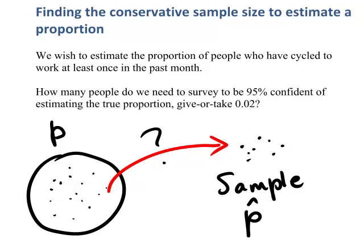This interval will be the sample proportion give or take a certain amount. If the estimate is a precise estimate, the amount we give or take will be small. How much we give or take is called the margin of error. We'd expect that larger samples would provide better information and give us a better estimate of the population proportion. But how large do we need the sample to be?